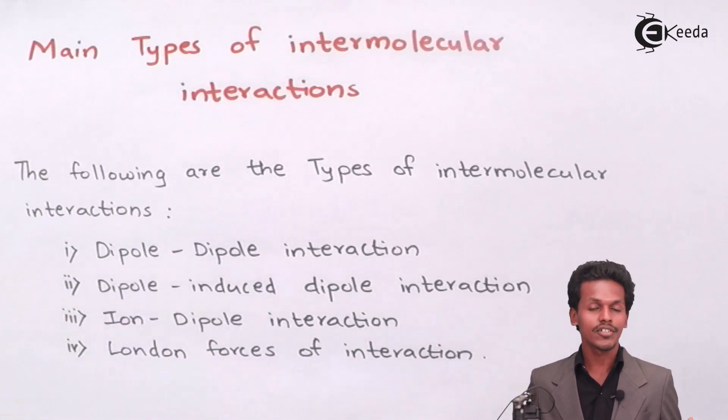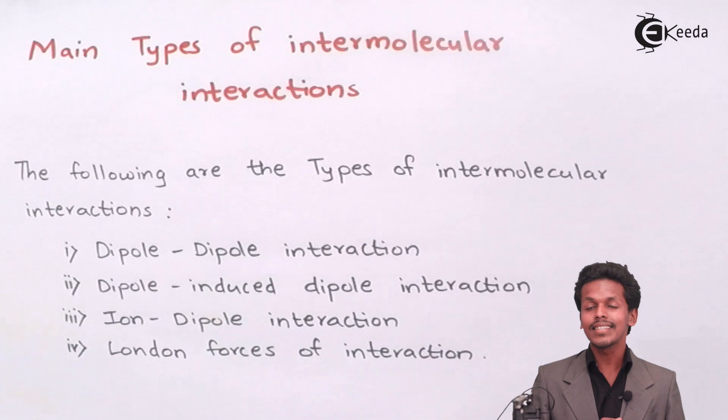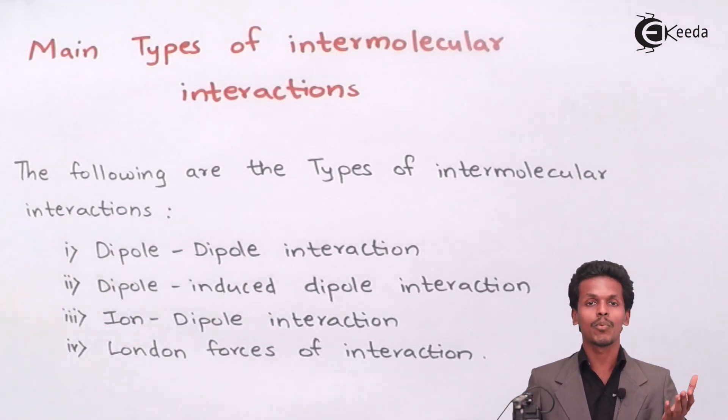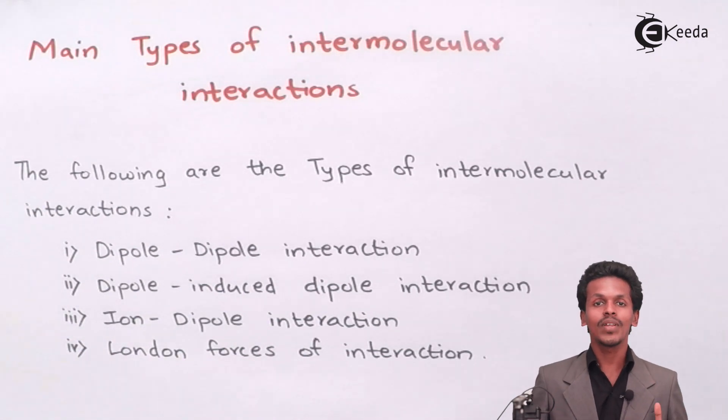What is Dipole-Dipole Interaction? This is a kind of interaction that takes place in dipole molecules or polar molecules, in which two polar molecules interact with each other to form a strong force of attraction. As the name suggests, it is the interaction between a dipole molecule and another dipole molecule.